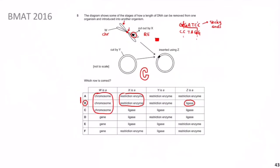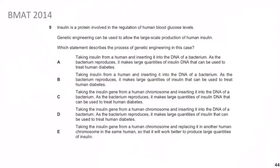Moving on: BMAT 2016 Q5 was very similar to BMAT 2019 Q1. Now let's tackle BMAT 2014 question 9. It reads: 'Insulin is a protein involved in the regulation of human blood glucose levels. Genetic engineering can be used to allow large-scale production of human insulin. Which statement describes the process of genetic engineering in this case?' Give it a shot and come back after a minute.